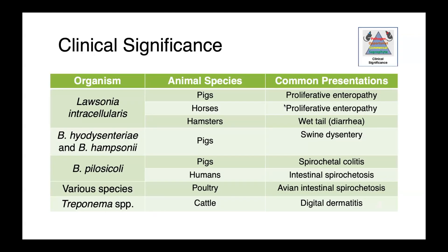For Lausonia, it's all enteric disease — in both pigs and horses we see proliferative enteropathy, and in hamsters it causes enteritis colloquially known as wet tail. Brachyspira hyodesenteriae and hampsonii cause an indistinguishable syndrome called swine dysentery in pigs. Pilosicoli causes spirochetocolitis in pigs, which is a somewhat milder form, and in people it's associated with intestinal spirochetosis. In birds, various species including Pilosicoli are associated with avian intestinal spirochetosis. Treponema species cause digital dermatitis in cattle.